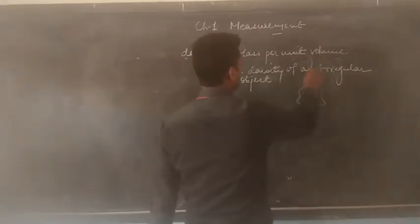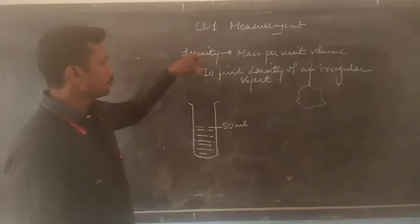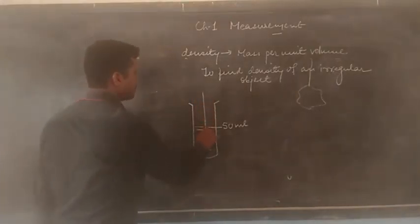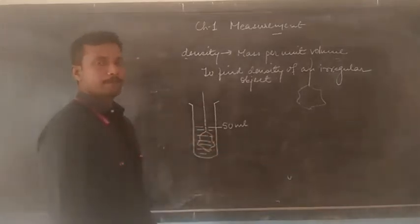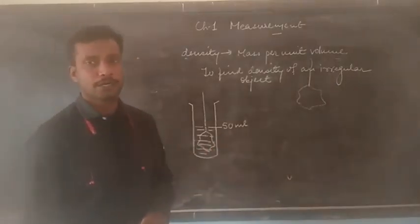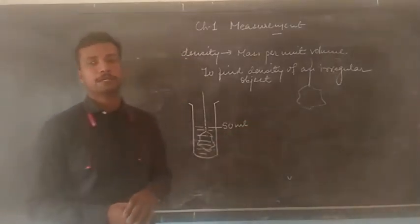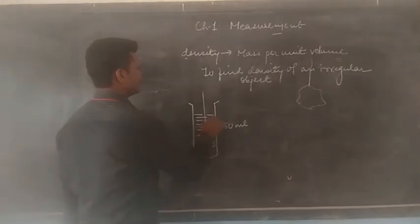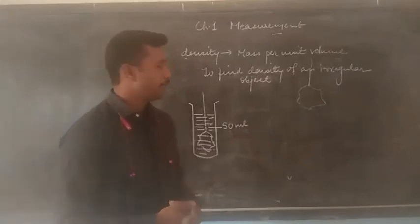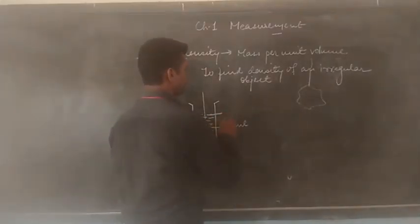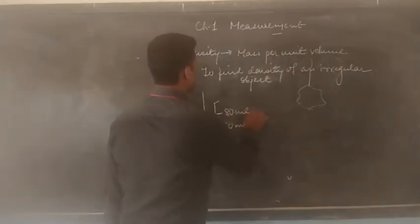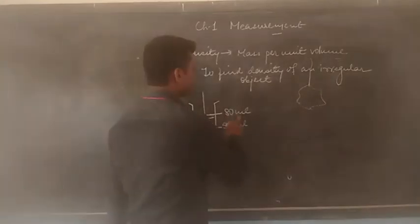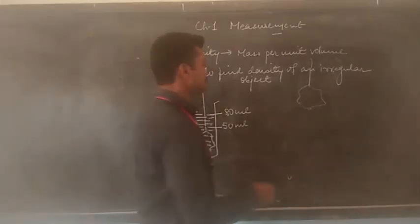First of all, tie the stone with a string and gently drop it into the water so that it is fully immersed. As soon as the stone is immersed into water, it is found that the level of water does not remain at 50 ml — instead it rises. Let us suppose the water has risen to a new height of 80 ml. The difference of these two volumes will give you the volume of the stone. So we can calculate the volume as 80 minus 50, which is 30 cm³.